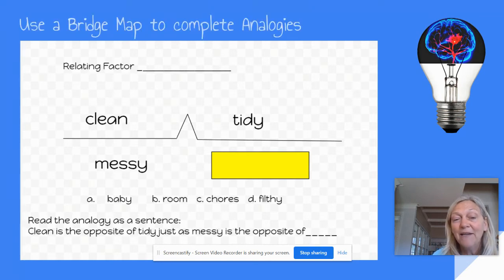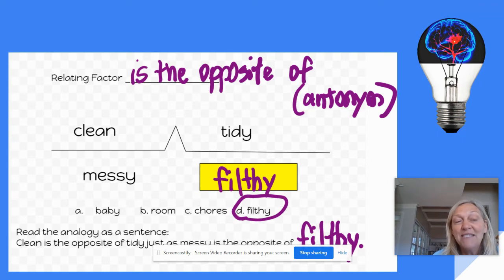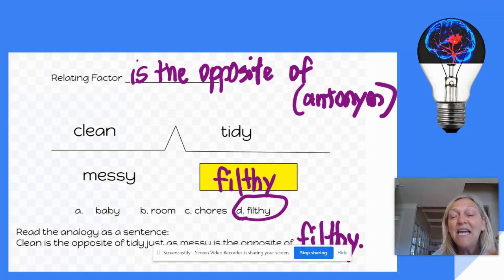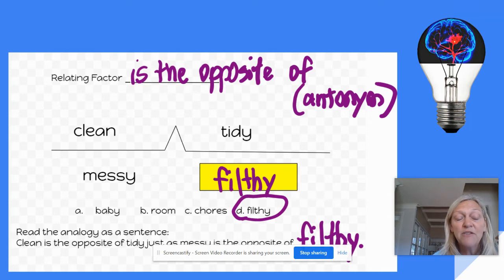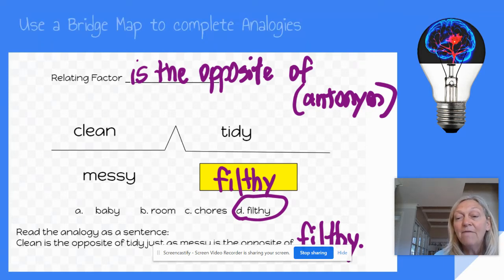Let's see if you got it right. Clean is the opposite of messy — that's the relating factor. To make both sides of the bridge have the same relationship, tidy is the opposite of which word? Baby, room, chores, or filthy? Tidy is the opposite of filthy. So our sentence would be: clean is the opposite of messy, just as tidy is the opposite of filthy.